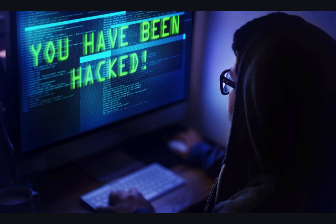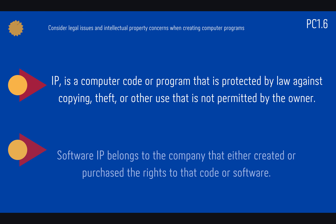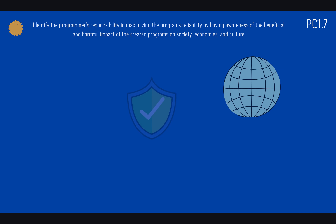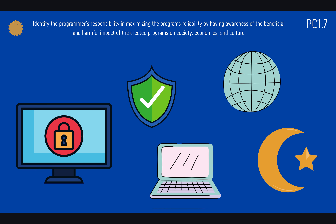Now let's talk about legal issues and intellectual property when creating a computer program. We have a term related to this topic: IP, which is the digital identifier of any device connected to an internet protocol packet. Our responsibility as programmers is to maximize software reliability by being aware of the beneficial and harmful effects of software, and we have to respect our culture and privacy of users.